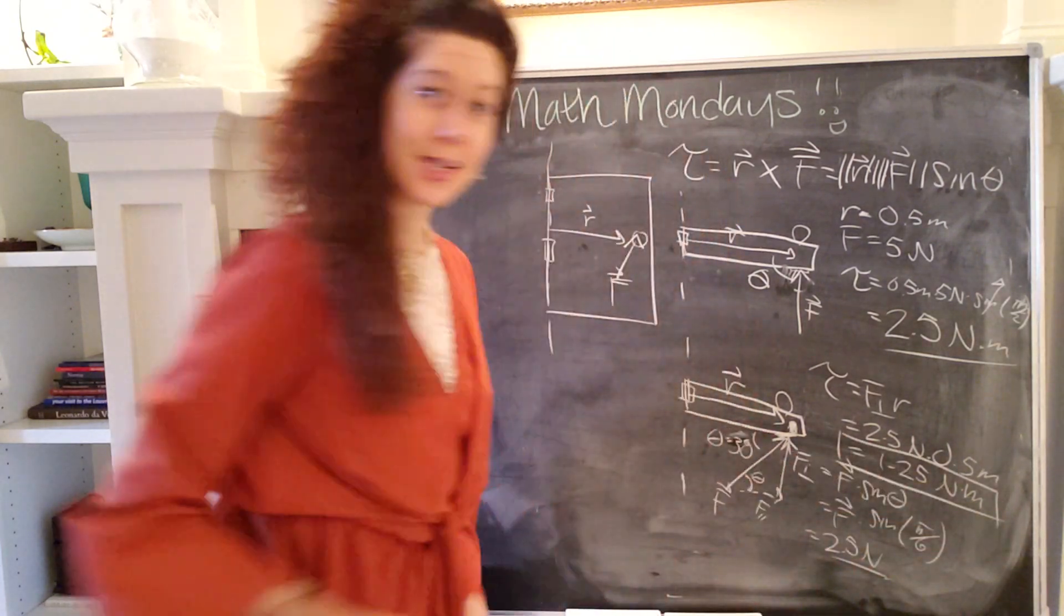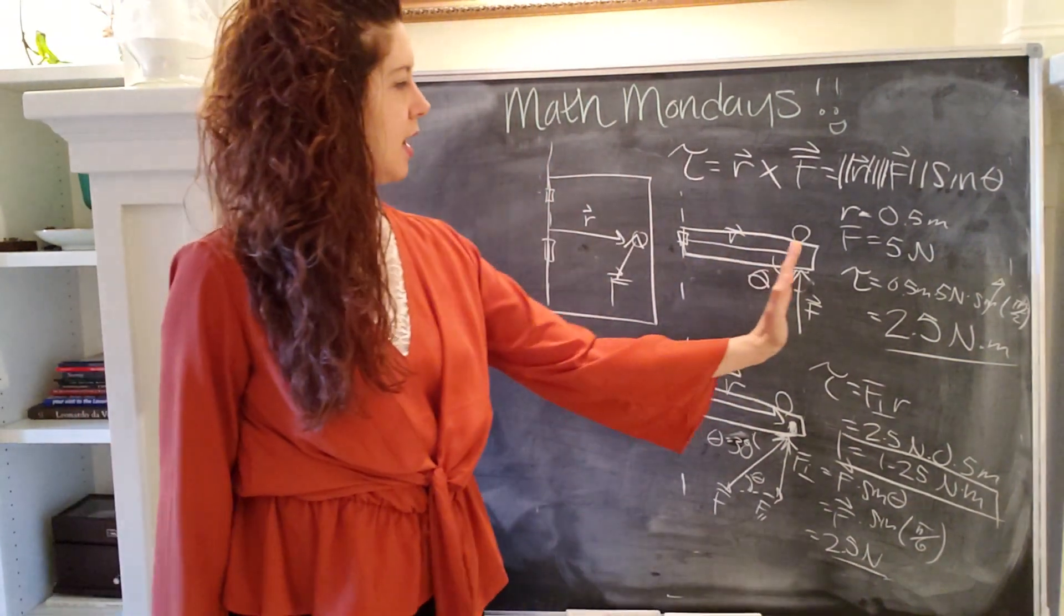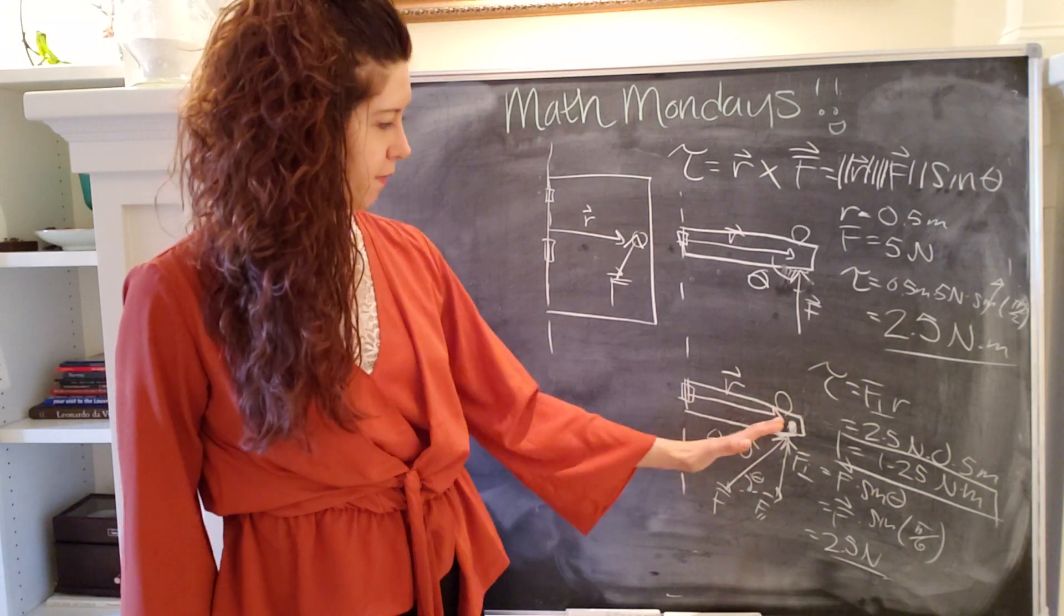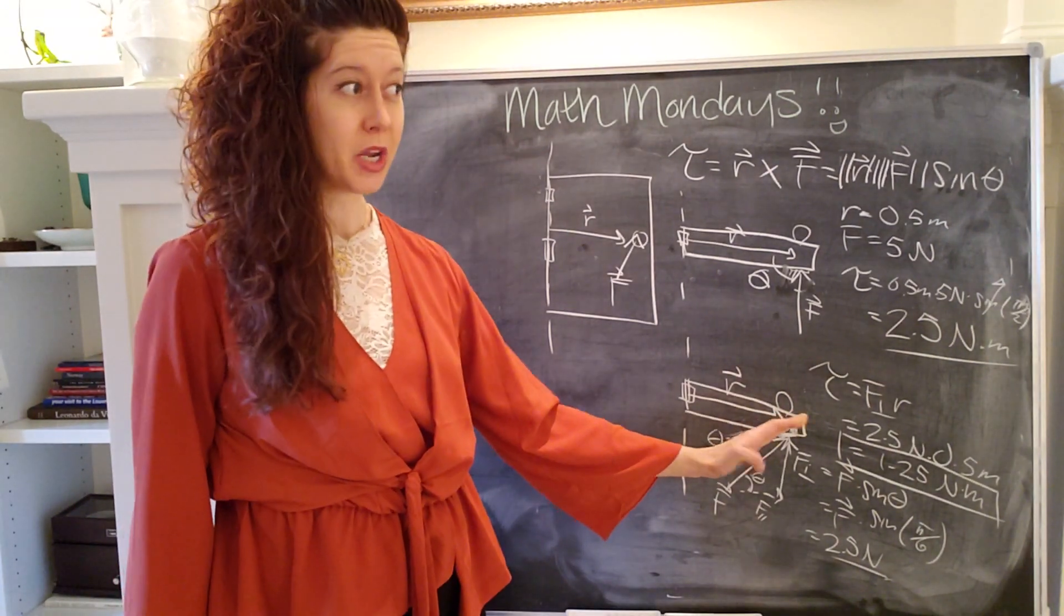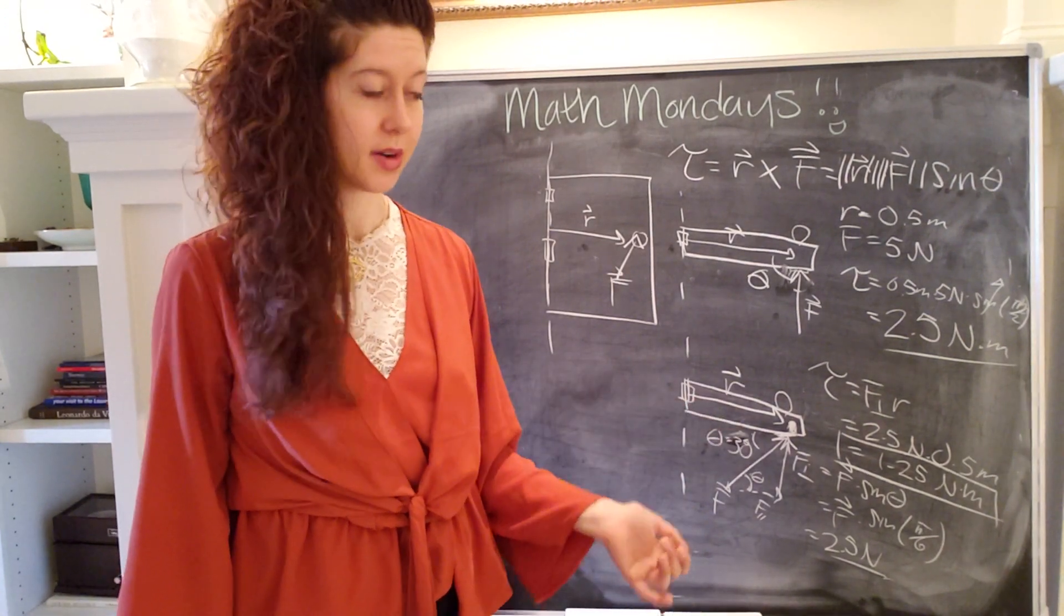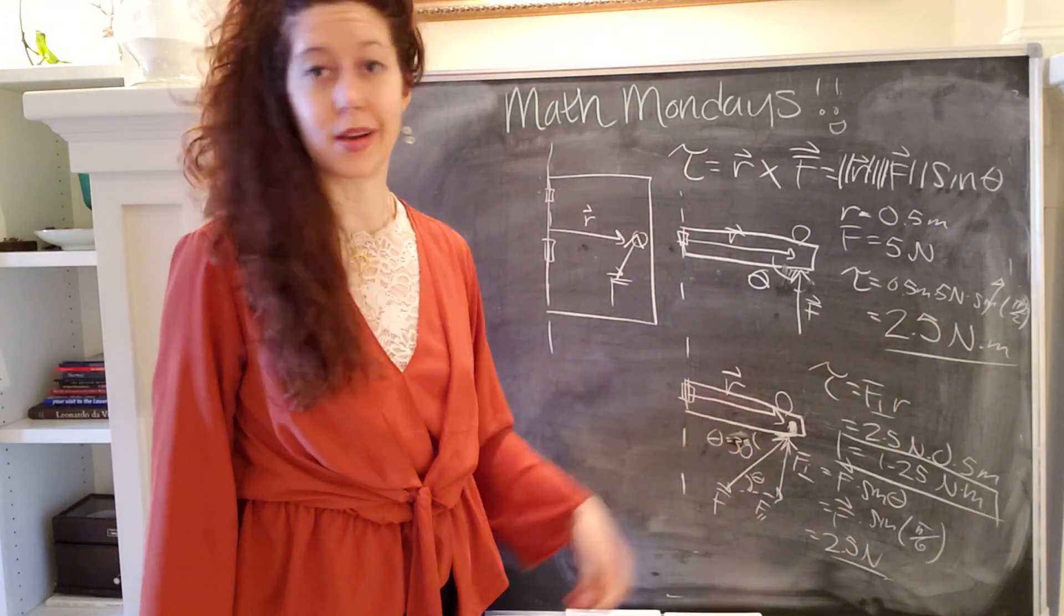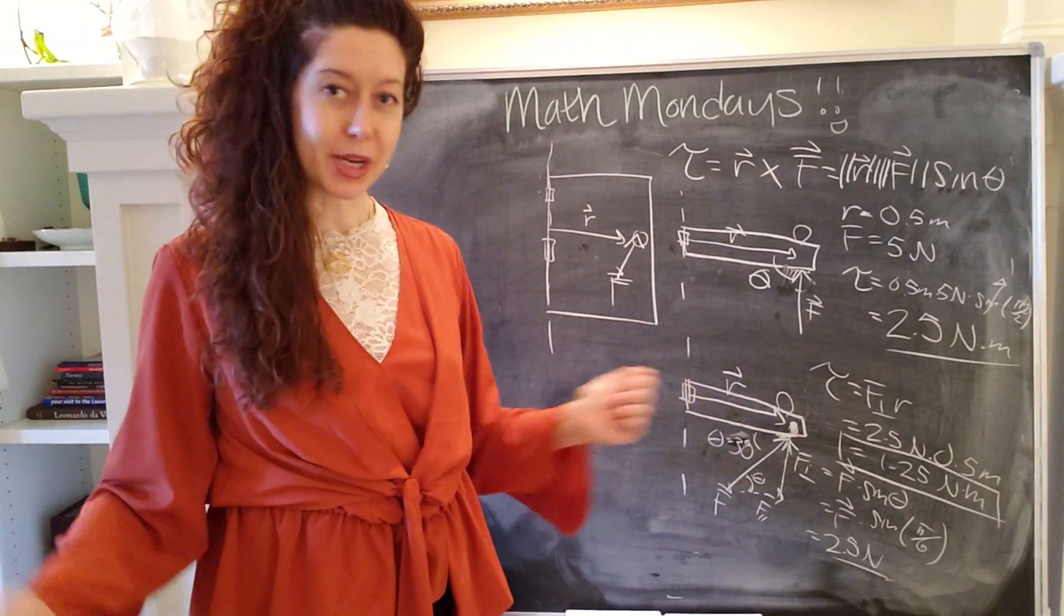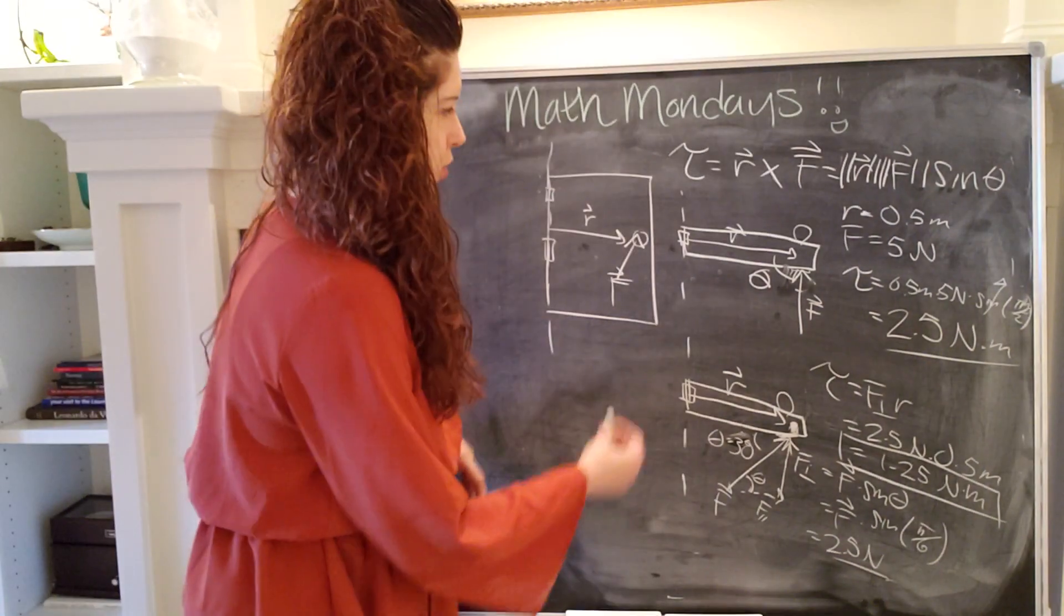So we get 2.5 newtons times 0.5 meters equals 1.25 newton meter. Boom. So that's really interesting, right? Because by applying the same force at a 30 degree angle, we significantly reduced the amount of torque on the door. In other words, the door is not going to move as much. Pretty interesting, right?